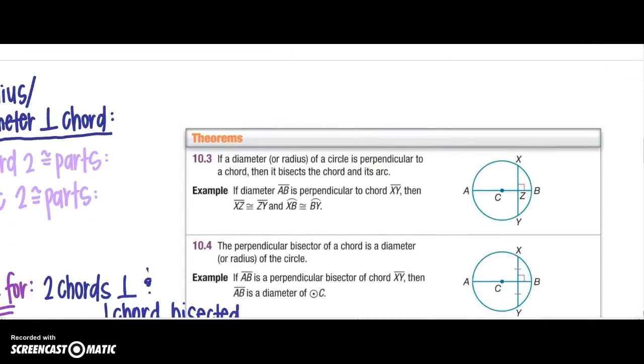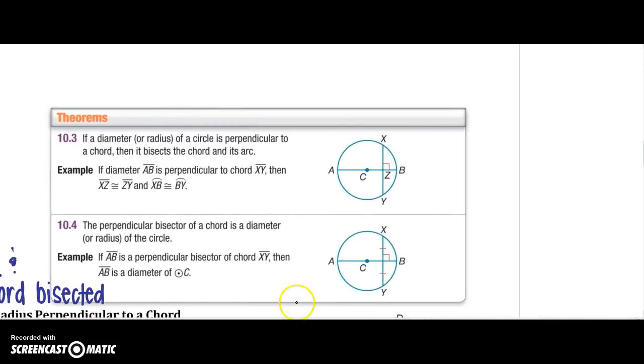All right, to the next page. We have two theorems that have a little bit of information, so let's look at those. If a diameter or a radius of a circle is perpendicular to a chord, then it bisects the chord and its arc. So I have a diameter here. If it is perpendicular to our chord XY,